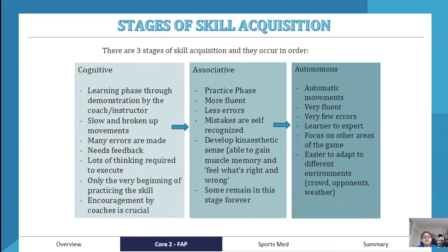For example, as a bowler, you start to feel that your hand may not be moving the way you want when you let go of the ball, or your wrist may not be twisting correctly. You start to feel what's wrong versus what's right. Some people tend to remain in the associative stage because they don't continue to the highest level of play.